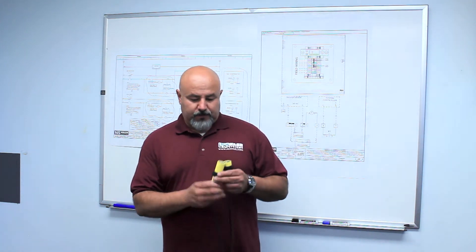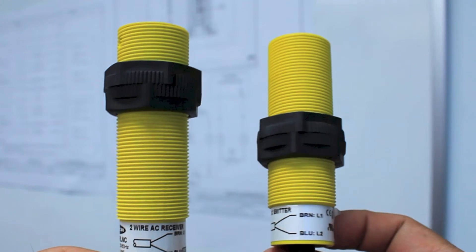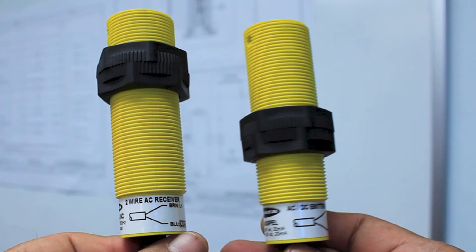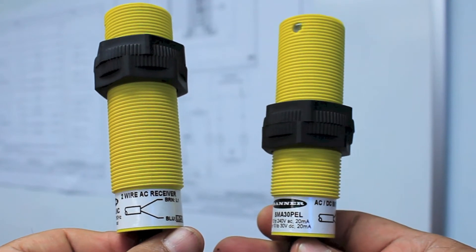These photo eyes, as you can see, are almost identical, same color wires on each end, except for the wiring schematic located at the bottom nearest the cable input.